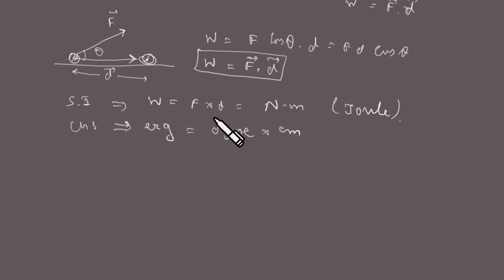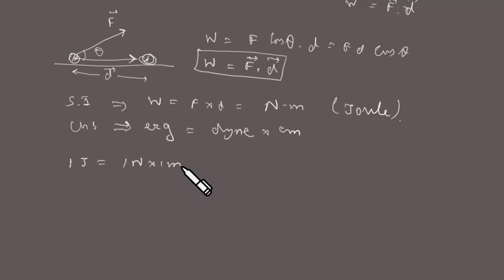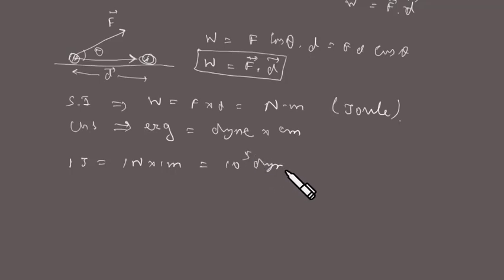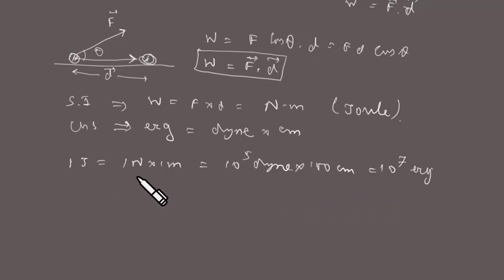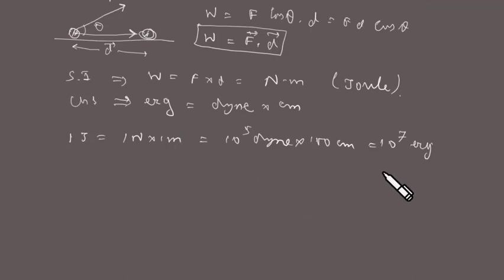We can find the quick relation between them: one Joule equals one Newton into one meter. One Newton equals 10 to the power 5 dyne, and one meter equals 100 centimeters. So that gives 10 to the power 7 erg. Therefore, one Joule equals 10 to the power 7 erg.